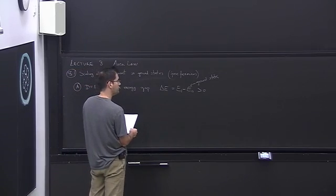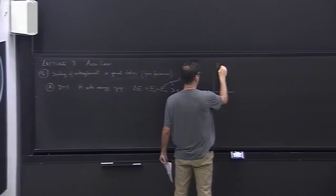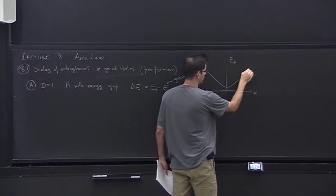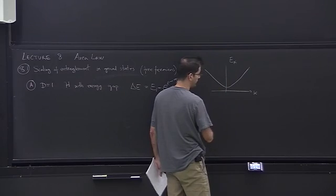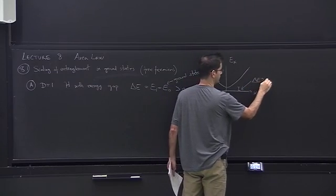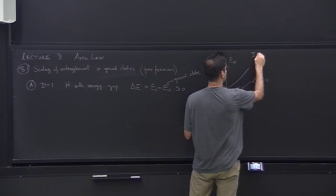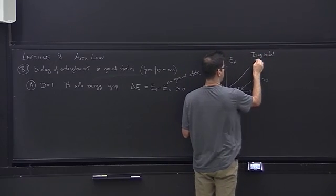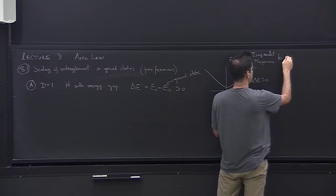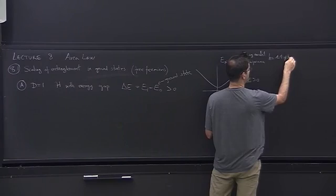We can draw the dispersion relation: energy as a function of k, momentum. In the thermodynamic limit you have a continuum of momentum, and we still have some finite gap — this is our delta E larger than zero. Examples could be the Ising model or the Majorana model with a parameter H not equal to the critical value of 1, say H equals 1.1.